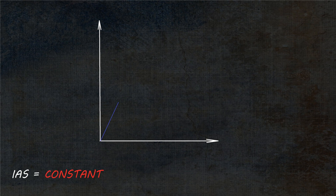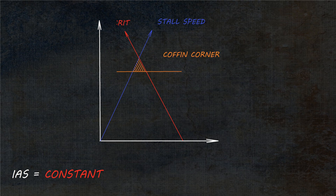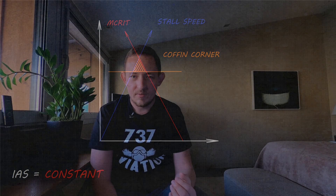Knowing that, we can finally explain what the coffin corner is. As we are climbing at constant IAS, you can see that the stall speed is actually increasing while our Mach number limitation is decreasing. Eventually we get to the point at which we have either a very narrow margin or no margin at all.